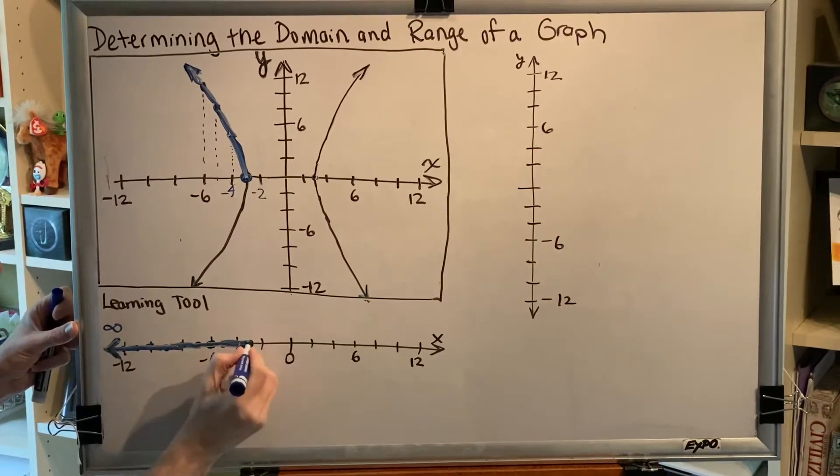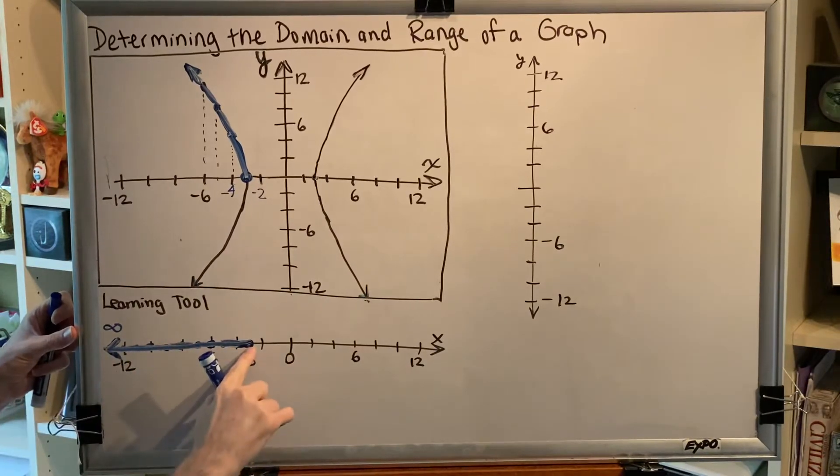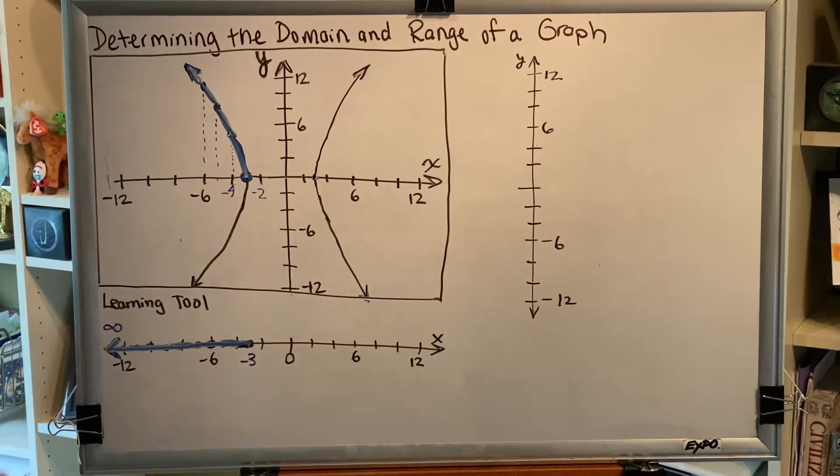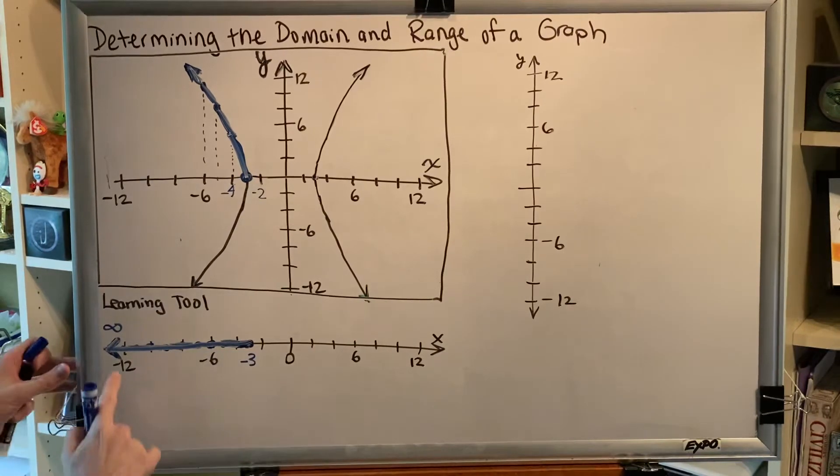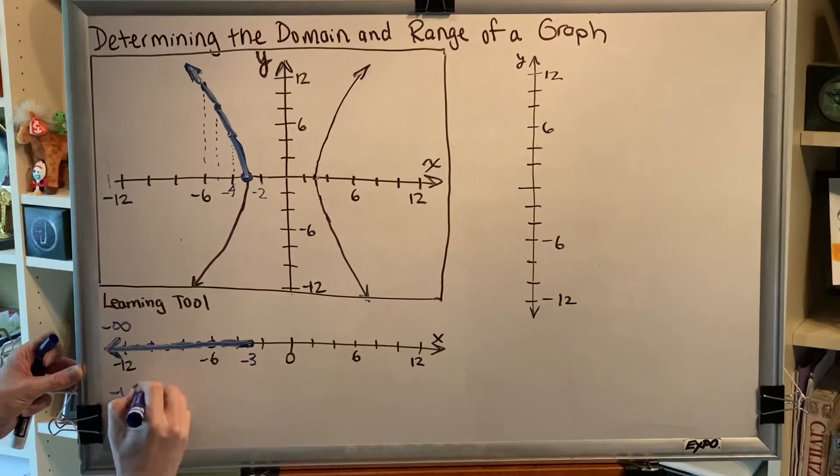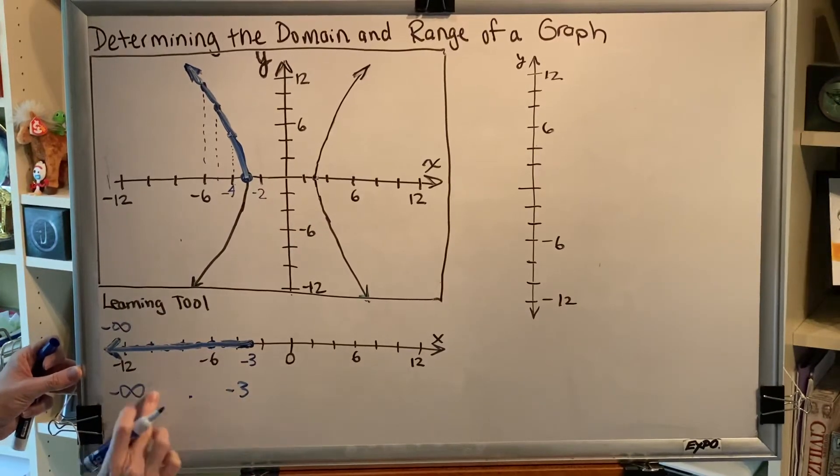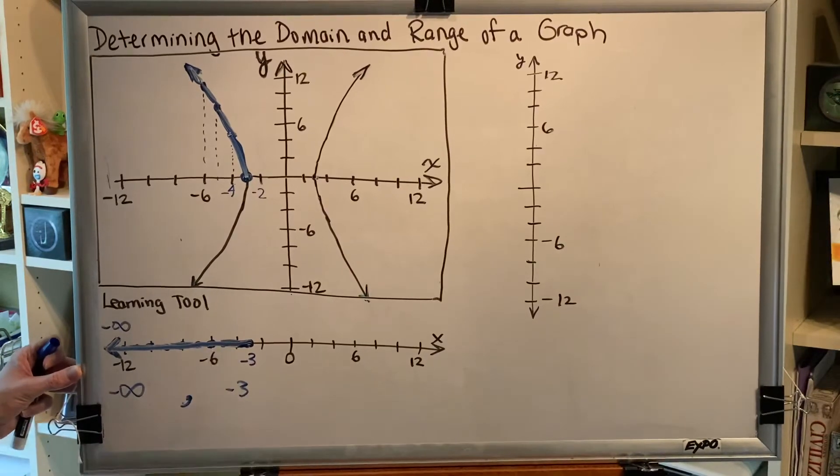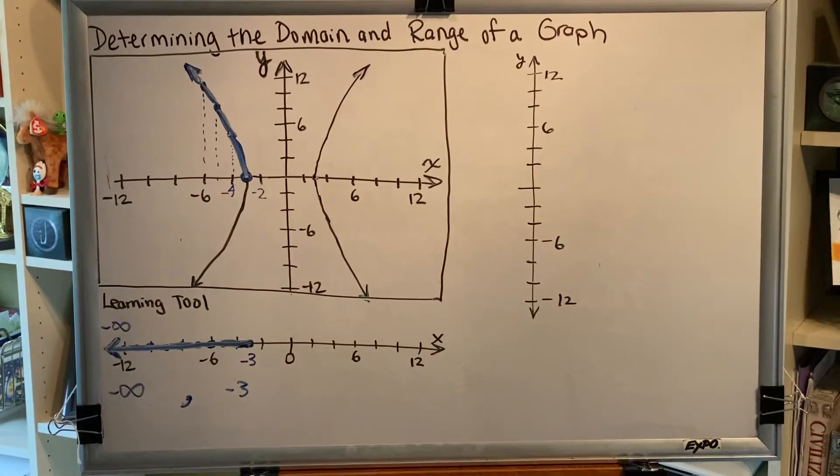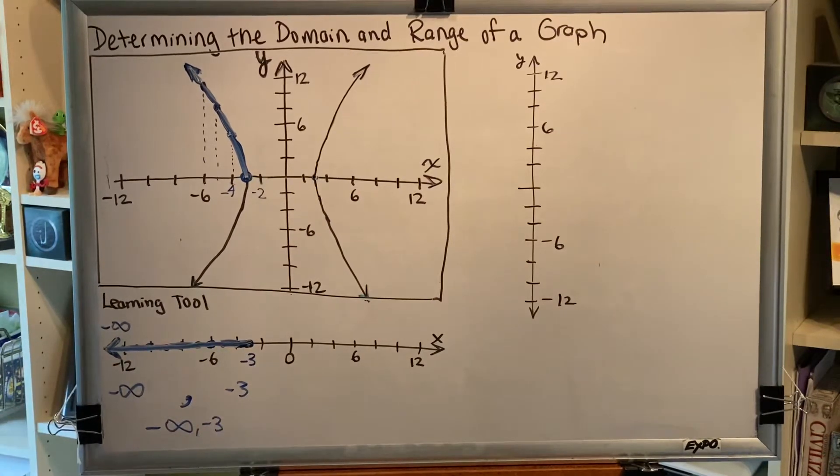So the part of the graph that we've looked at so far contains x-coordinates that go from negative 3 to the left forever. We could write that as an interval. That would be from negative infinity all the way to negative 3. And we would separate those by a comma. And then we put some symbols next to those to indicate whether or not we're going to include or exclude the endpoint values.